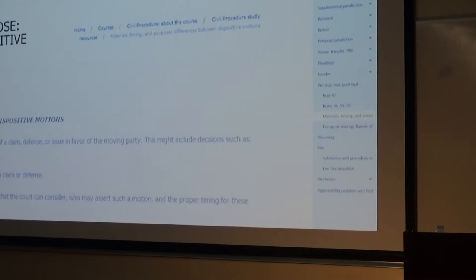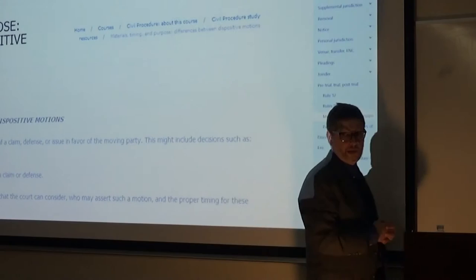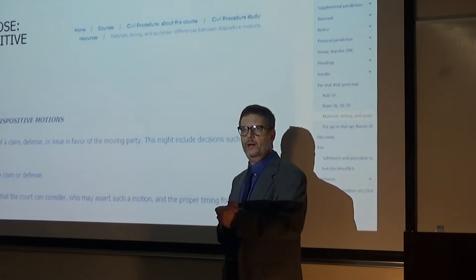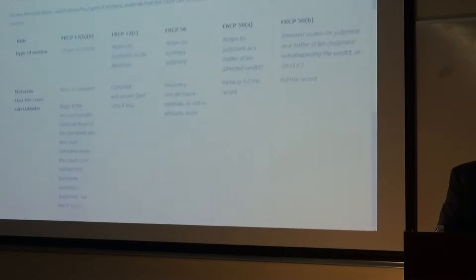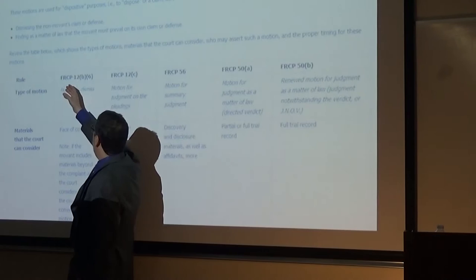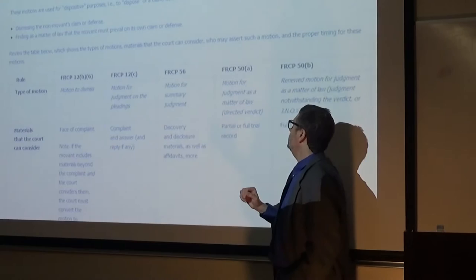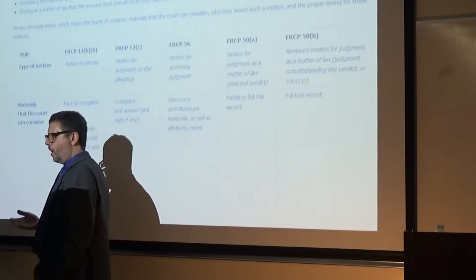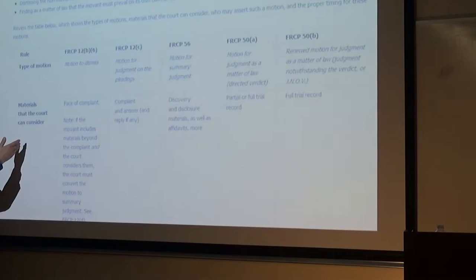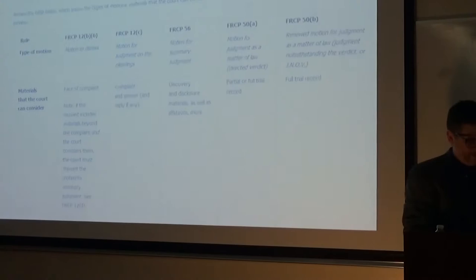We're going to do another session. The number of topics we can do today is by nature limited — it's only a three-hour review. We're going to talk about motions: pretrial motions, trial motions, post-trial motions. A helpful starting point is the handout on my website that compares major motions — a 12B6 motion, a 12C motion, a Rule 56 motion, a 50A and 50B motion, and a Rule 59 motion for a new trial. Keep in mind the materials the court can consider and the time when those motions are typically done.